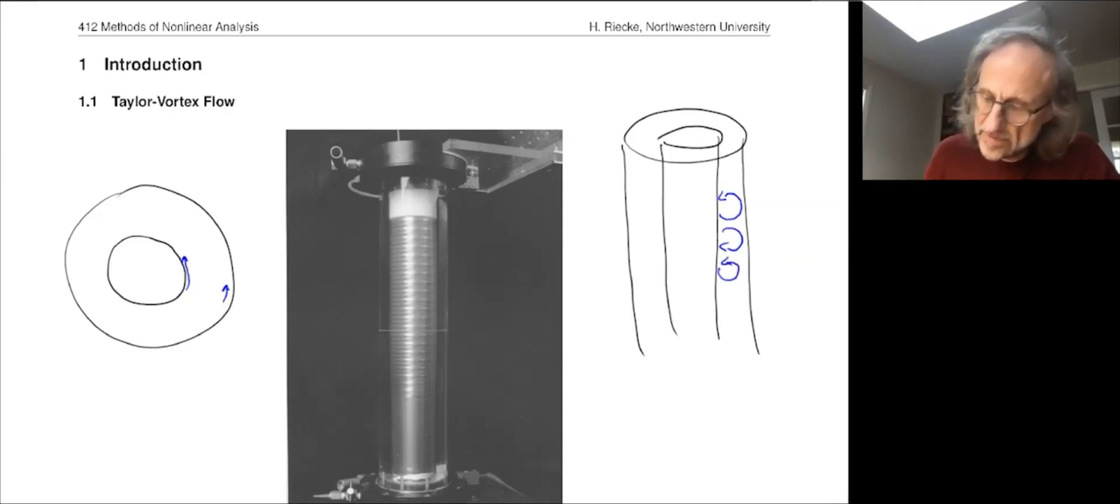Of course, the fluid is not just going like that, it's going around at the same time. So it actually does some kind of spiral motion. But here you see most of these vortices, and they're sort of stacked like donuts.